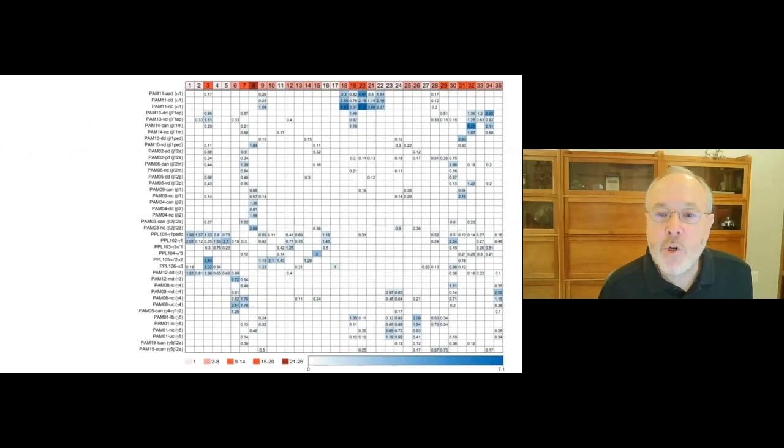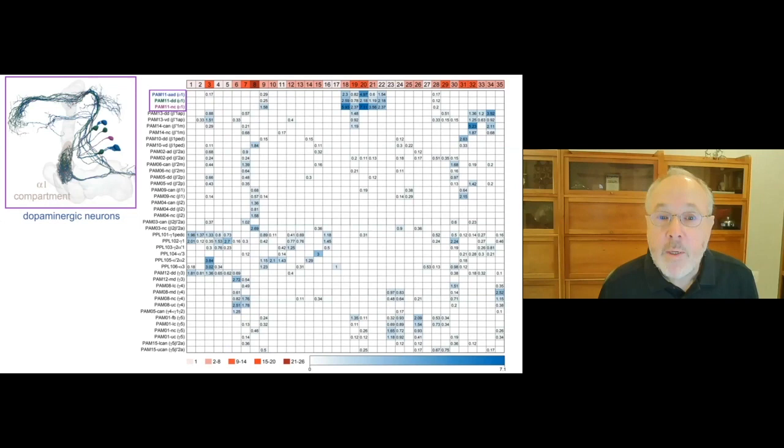The neurons that are upstream of the dopaminergic neurons can be grouped into morphological classes, 35 of which are shown on the columns of the matrix and the rows of the matrix represent different morphological subclasses of dopaminergic neurons. Class three neurons, for example, are upstream of many different dopaminergic neurons as are those in class seven. However, there are five classes that are heavily biased to almost exclusively input to the dopamine neurons going to the alpha one compartment that I showed you in the movie, such as class 18 and class 22.